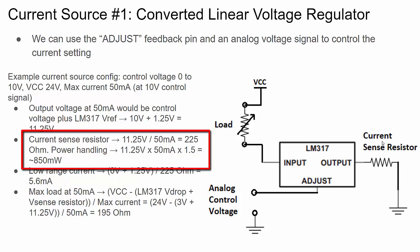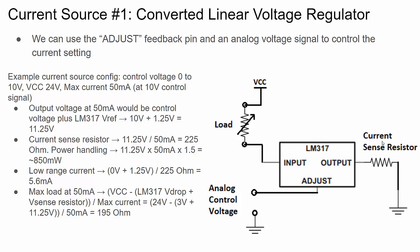For power handling, with 11.25V max across the resistor and 50mA max current, applying a 1.5× safety margin gives about 850mW. There's also a class of components called current sense resistors — they have accurate resistance values and are designed to maintain stable resistance as temperature changes, making them ideal for this application.